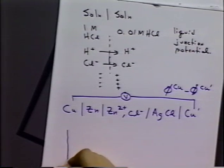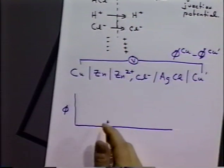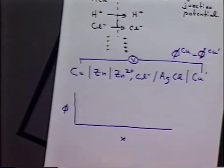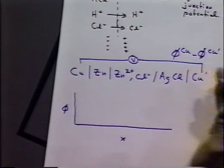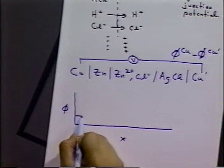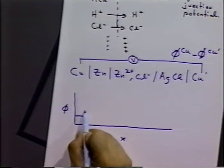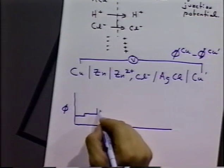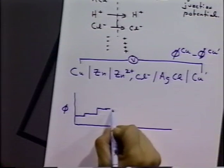That difference in the potentials is due to all the potential differences at all the interfaces. We can diagrammatically indicate that by plotting potential on the y-axis and the x-direction indicating the direction along this cell. Copper has a particular potential, and then there's going to be an interfacial potential between the copper and the zinc, and then between the copper and the zinc two-plus ions in solution.